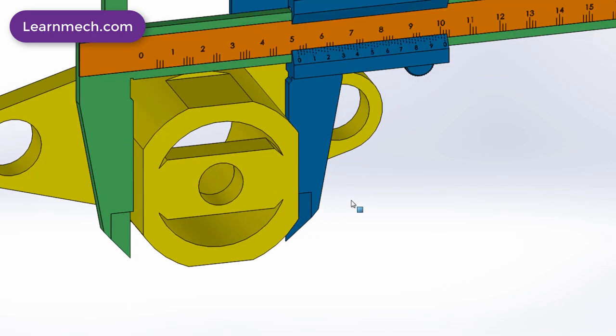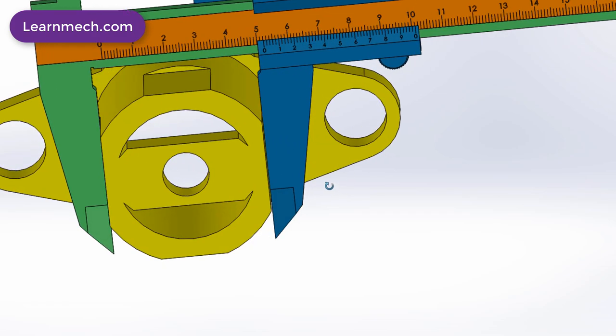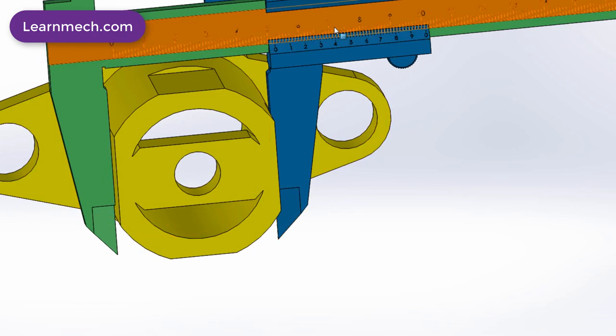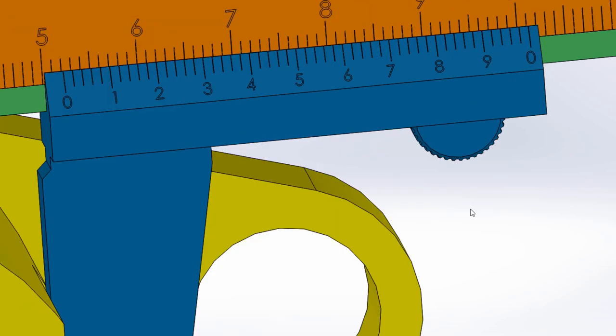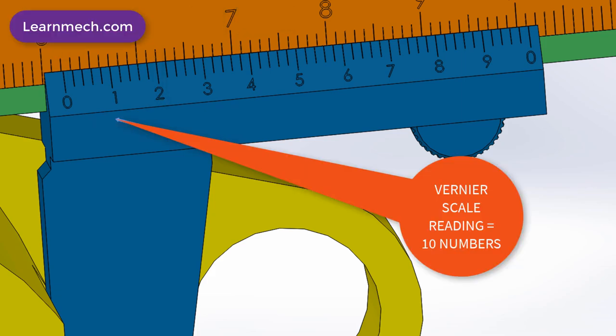This is another example of external jaw. In this, the value of main scale reading is 52 mm and Vernier scale reading value is 10 divisions. So final reading will be 52.20 mm.